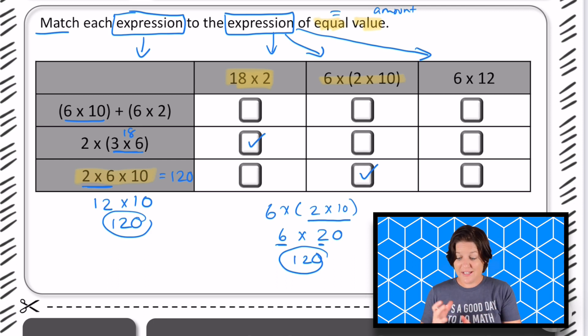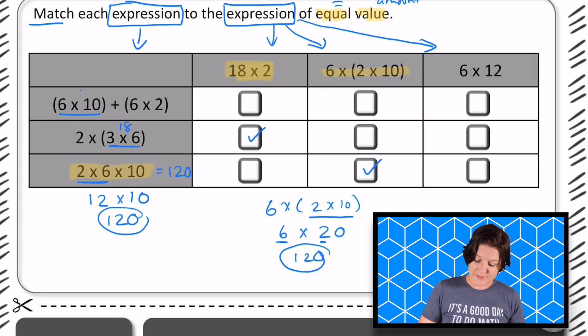What I'm going to do is put it back together and see if it looks like 6 x 12. So 6 x 10 is what? Sixty. Good.